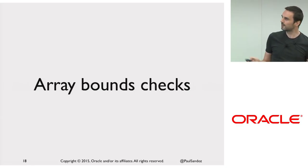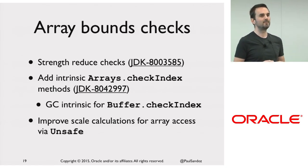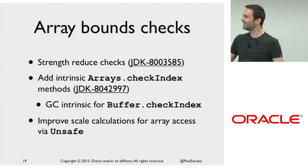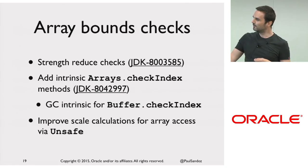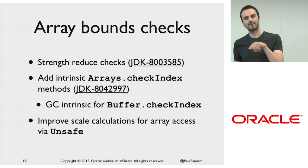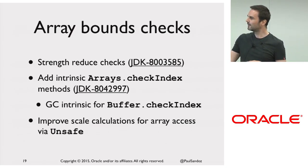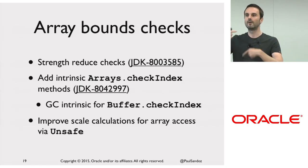I'm going to talk about array bounds checks. There are a number of small things we can do to improve arrays — they've been a bit neglected and we haven't given them enough attention. There's one issue that's been hanging around for a while that Chris Mock fixed — we're going to try and get that in to strengthen bounds checks in fork join. And there's work Roland is doing to add an arrays.checkIndex intrinsic, which tells Hotspot the index is bounds-checked, making it look like an unsigned check. We can then GC the buffer check index. As part of that, we can improve scale calculations for array access using unsafe to get tight code in hot loops.